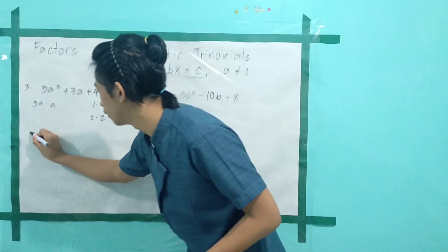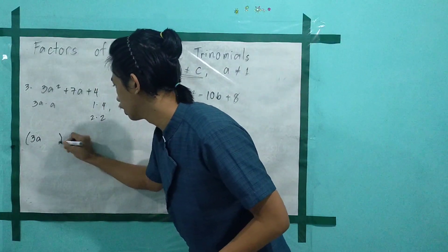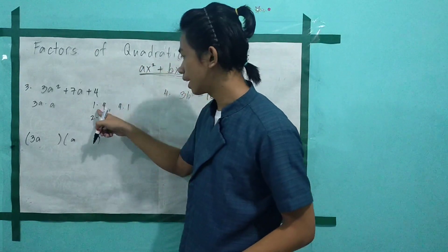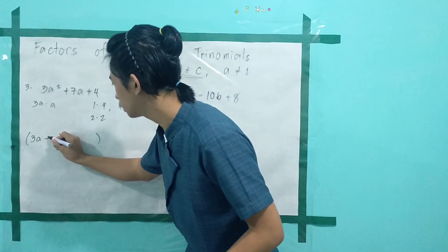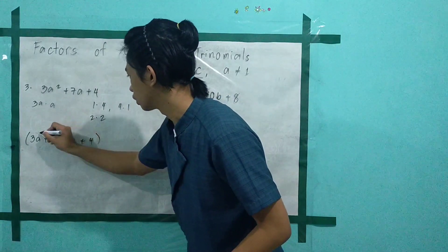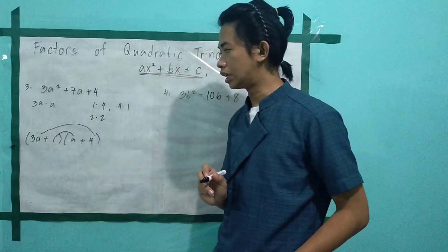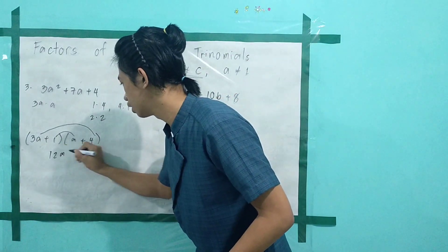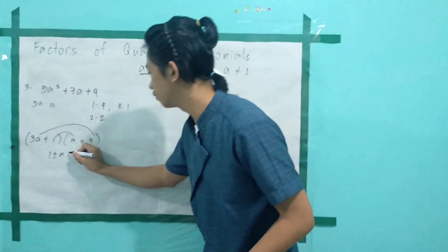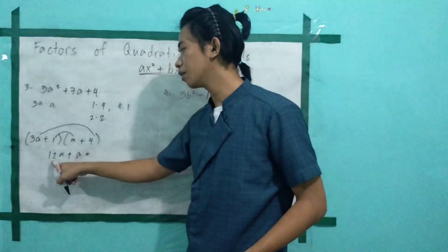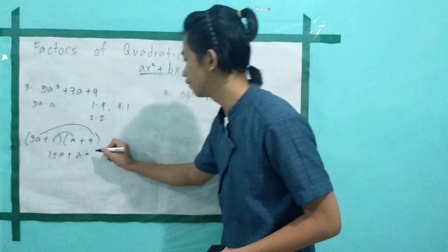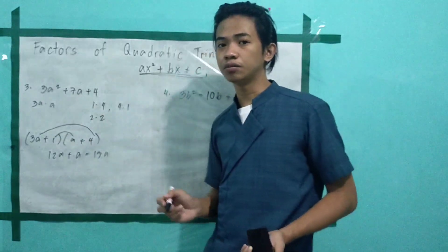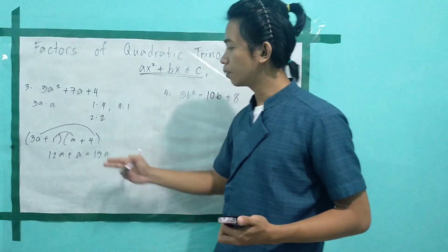Trial and error: try (3a + 1)(a + 4). So 3a multiplied by 4 gives 12a, and 1 multiplied by a gives a. Their sum is 12a plus a, which is 13a. Our middle term is 7a — they are not the same. Therefore, this is not the correct factoring.